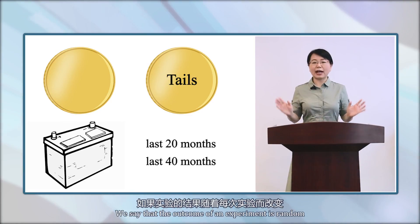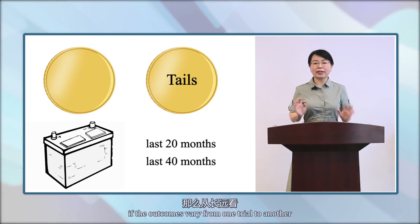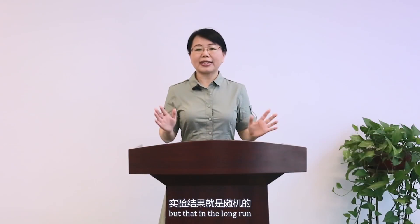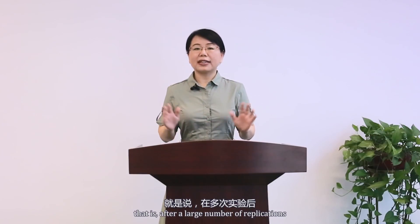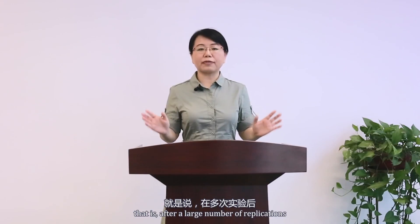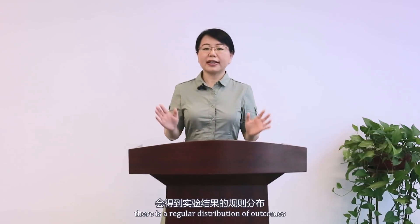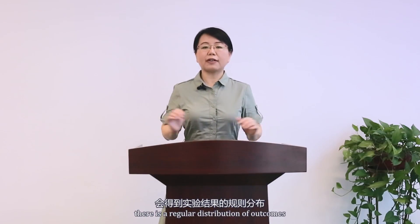We say that the outcome of an experiment is random if the outcomes vary from one trial to another, but that in the long run, that is, after a large number of replications, there is a regular distribution of outcomes.